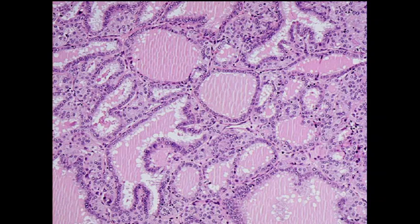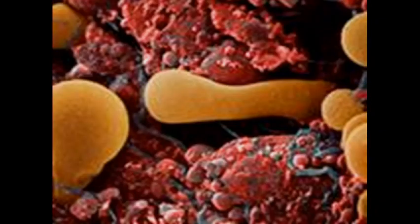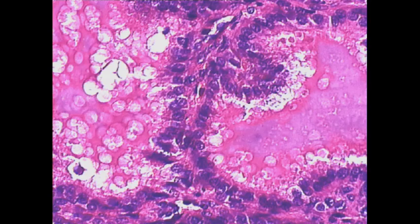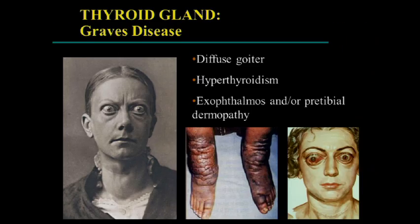Here's a patient with a hyperfunctioning thyroid — you have these active-looking cells and peripheral scalloping. This electron micrograph shows how thyroid hormones are produced and stored as colloid in the center, then reabsorbed back into the cytoplasm to be discharged into the bloodstream. This is a hyperfunctioning thyroid.